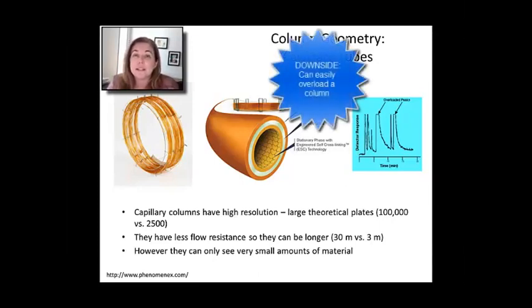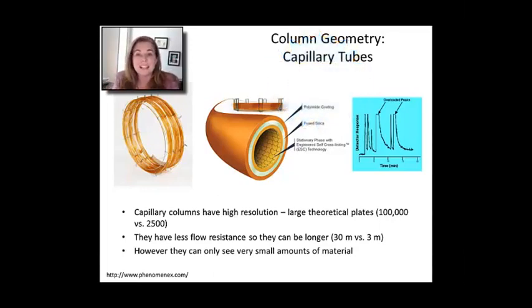Their real big disadvantage besides the fact they're pretty expensive is that they are easily overloaded. If you put too much material in, you're going to actually saturate that very small amount of stationary phase and really change your separation enormously. So if, for example, you're trying to use GC to measure an impurity in the background of a lot of other organic material, capillaries may not be the way for you to go.